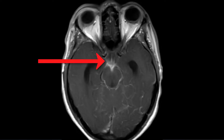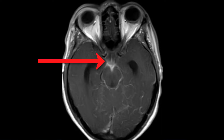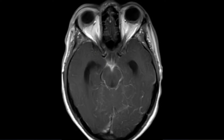The subarachnoid segment is also vulnerable to infectious, inflammatory non-infectious, and cancerous meningitis. Such conditions are often visible on high-definition enhanced MR imaging.